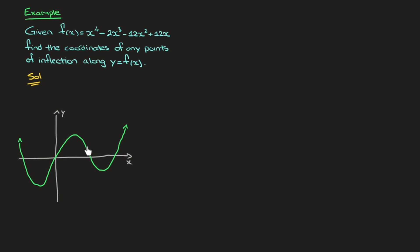Then carrying on, we can see that as we move further to the right, it changes concavity again somewhere around here to become a concave up curve again. So from this sketch alone, it looks like there's a point of inflection somewhere here, and another one roughly here. If we had our graphical calculator, we'd be able to find the x-coordinates of these points of inflection using it.